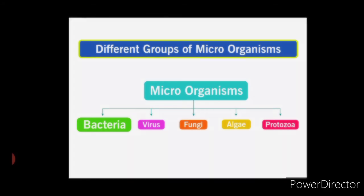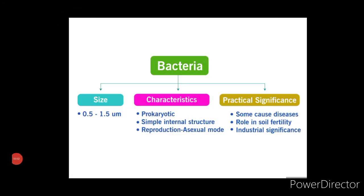The size of bacteria ranges from 0.5 to 1.5 micrometers. Its major characteristics are: they are prokaryotic and unicellular, they have a simple internal structure, they grow on artificial lab media, and reproduction is by asexual mode — characteristically by simple cell division.